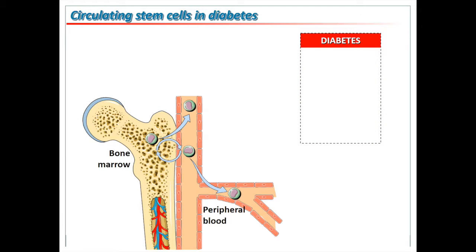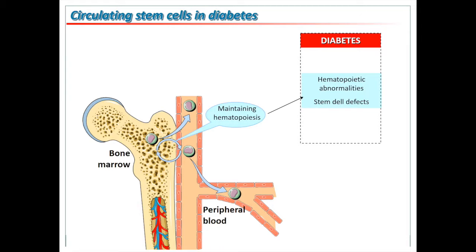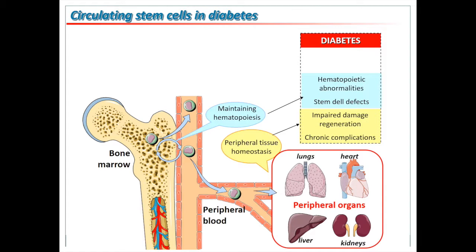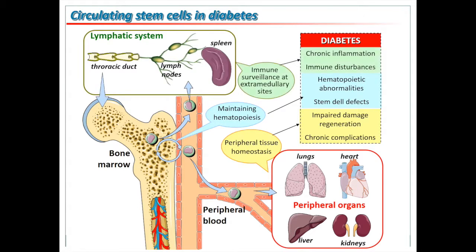This cartoon shows how diabetes affects the bone marrow and circulating stem cells and which are the consequences. An impaired recirculation of stem cells in and out the bone marrow can cause hematopoietic abnormalities and stem cell defects. A compromised homing of stem cells to peripheral tissues impairs regeneration and promotes chronic complications. Finally, an impaired patrolling activity of stem cells in peripheral lymphoid tissues may contribute to inflammatory disturbances and innate immunity.